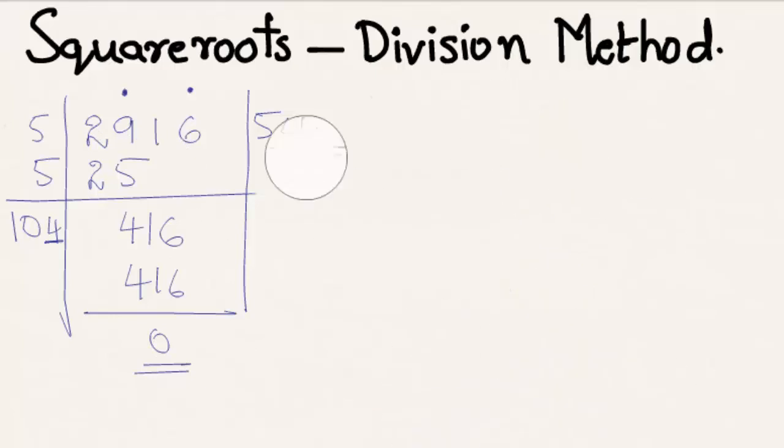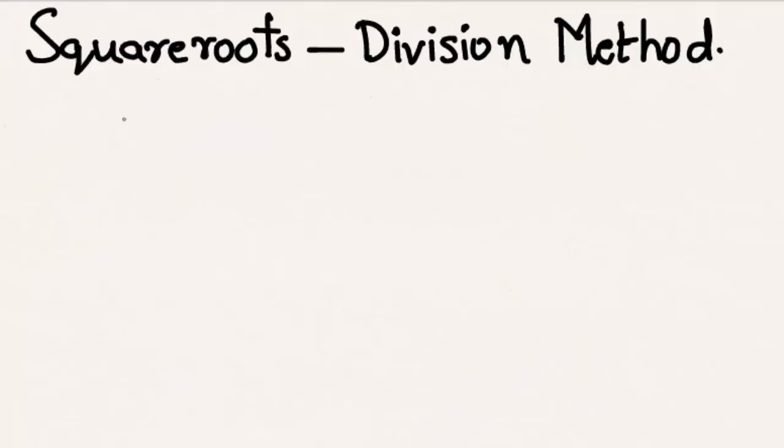Now let us find the square root of another number, 3721. Put a dot in the units place, and then put a dot on the number, leaving a digit after digit from right to left. We get a dot here, and we have paired the digits. We get 37 and 21.